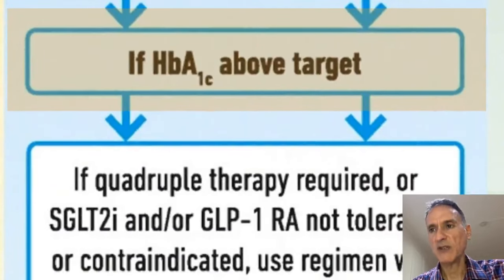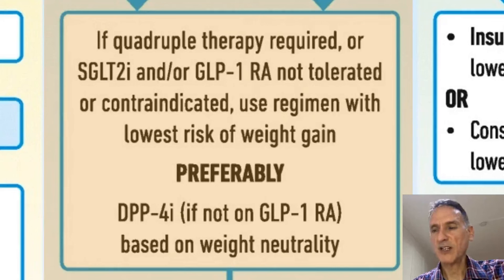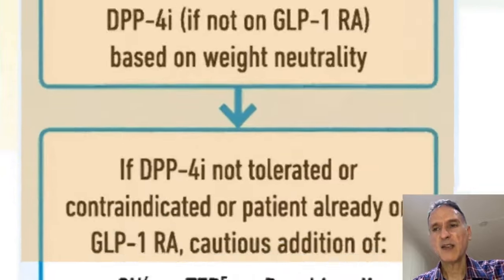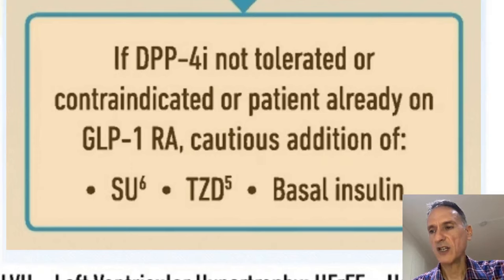If HbA1c remains above target — now on metformin, a GLP-1 receptor agonist, and an SGLT2 inhibitor — we move to quadruple therapy. If that combination is not tolerated or is contraindicated, the lowest risk of weight gain is a DPP-4 inhibitor, which has weight neutrality, but only if the patient is not already on a GLP-1 receptor agonist. If a DPP-4 inhibitor is not tolerated, contraindicated, or the patient is already on a GLP-1 receptor agonist, we should use a sulfonylurea, pioglitazone, or basal insulin cautiously, as all are associated with weight gain.